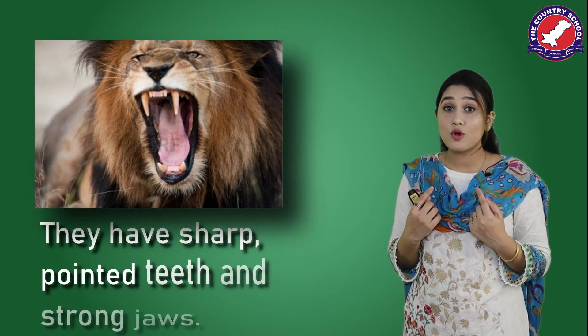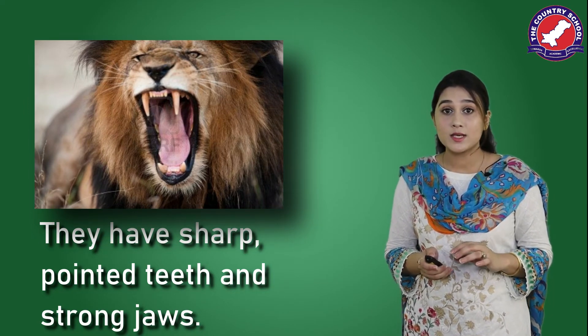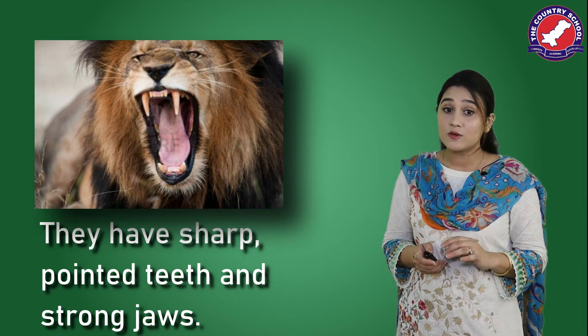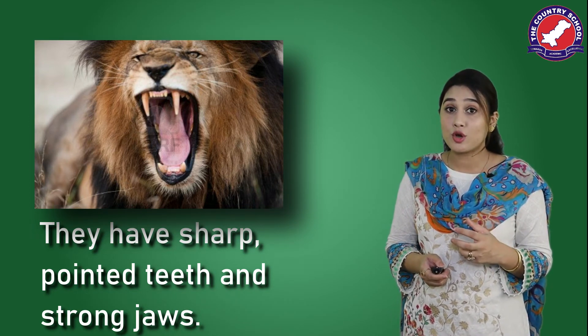Can you look at this lion carefully? It has pointed teeth, a strong jaw, and sharp claws. They have pointed teeth so they can tear the flesh, strong jaws so they can rip it apart, and strong sharp claws so they can hold their prey. These are all adaptations according to the food they eat.